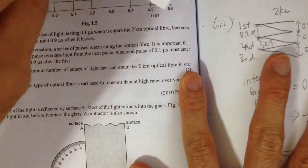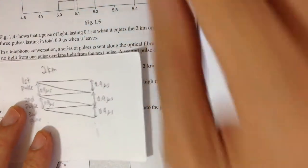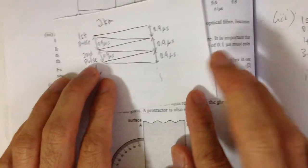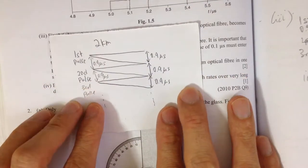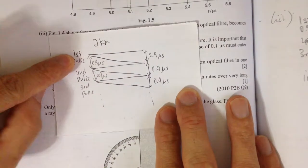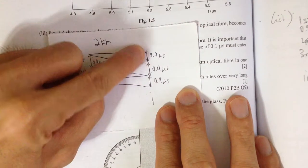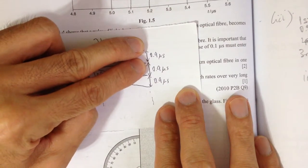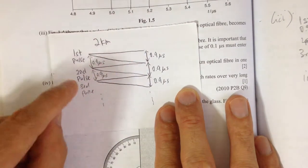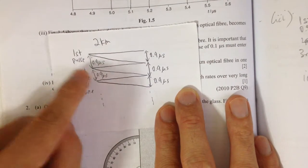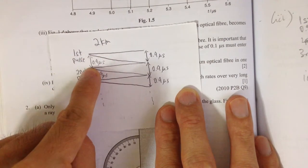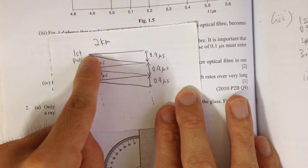So let's examine the 2km distance in more detail. In the 2km distance, when one pulse is entered, it spreads into 3 pulses and has a spread of 0.9 microseconds. In order for the second pulse to be entered, it has to have a minimum distance of 0.9 microseconds from the first pulse.